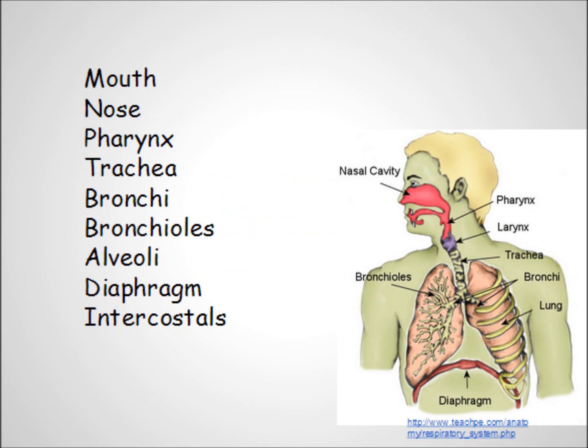So, those are the components of the respiratory system. First, the airway, which consists of mouth, nose, pharynx, trachea, bronchi, bronchioles, and alveoli. The lungs house much of that airway from the bronchi down. Then we have the diaphragm and intercostal muscles, which help to increase and reduce the size of the chest, causing air to flow in and out.